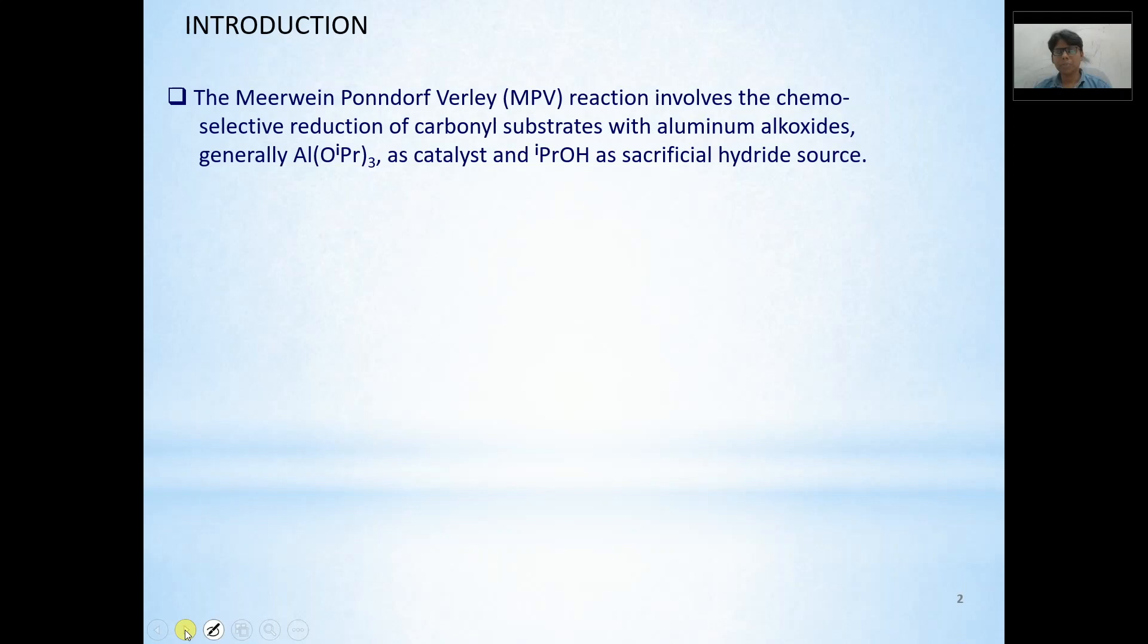Classically, the definition of Meerwein-Ponndorf reaction is that it involves the chemoselective reduction of carbonyl substrates with Al-Alkoxide, generally Al-Isopropoxide as a catalyst and Isopropyl Alcohol as sacrificial hydride source. Now this sacrificial hydride source, one must remember why I am saying this, that we will discuss as the class moves ahead.